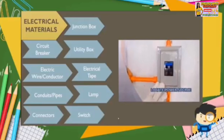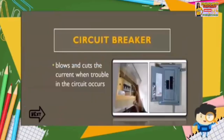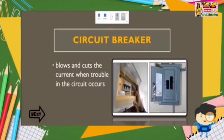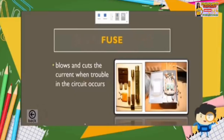Let's talk about their function. The first one is circuit breaker — it blows and cuts the current when trouble occurs in the circuit, or when there has been a short circuit. There is another material with almost the same function, and that is fuse. A fuse also blows and cuts the current when trouble in the circuit occurs, or what we call a short circuit.